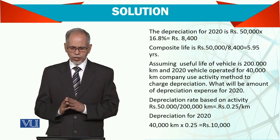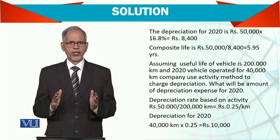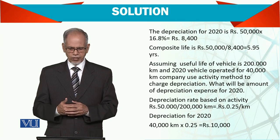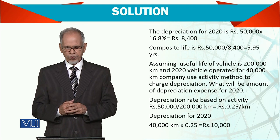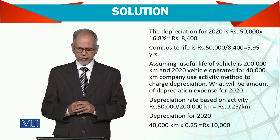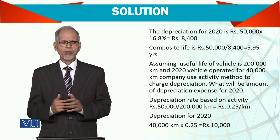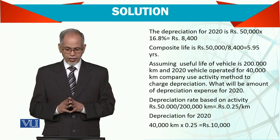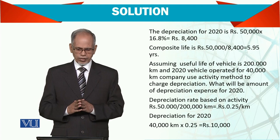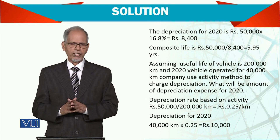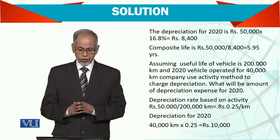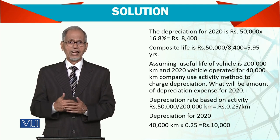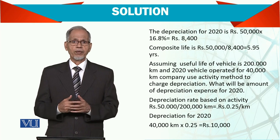Now, assuming the useful life of the vehicle is 200,000 km, instead of using the 16.8% composite rate, we consider that if the truck's useful life is 200,000 km and in 2020 the vehicle operated only 40,000 km, the company uses the activity method of charging depreciation. The depreciation rate under the activity method is 50,000 divided by 200,000 km, which gives 0.25 per km. During 2020 they operated for 40,000 km, so depreciation comes to 10,000. This is how activity-based and composite depreciation rates are used.